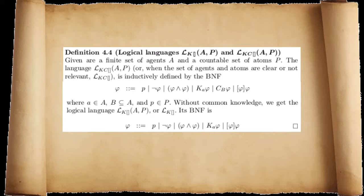Definition 4.4: Given a finite set of agents A and a countable set of atoms P, the language LKC given AP — or simply LKC when agents and atoms are clear or not relevant — is inductively defined by the following formula, where the small a represents an arbitrary agent in A, B is a subset of A, and the small p represents a proposition in P. Without common knowledge, we get the logical language LK, and the second formula is the result of these assumptions.